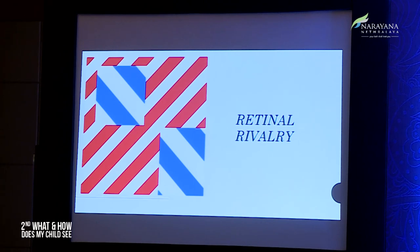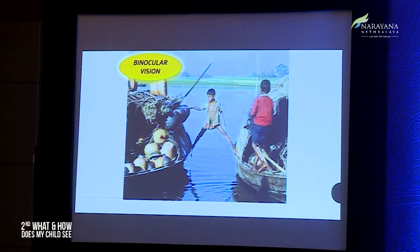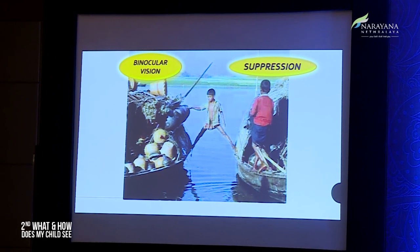The two foveas should compete against each other in retinal rivalry. It is like standing on two boats — if you perceive both images you achieve binocular vision with retinal rivalry; if you suppress one image, a suppression scotoma will develop. Either you go into retinal rivalry to achieve binocular vision, or if you are better off seeing with one eye, complete suppression of one eye will develop.